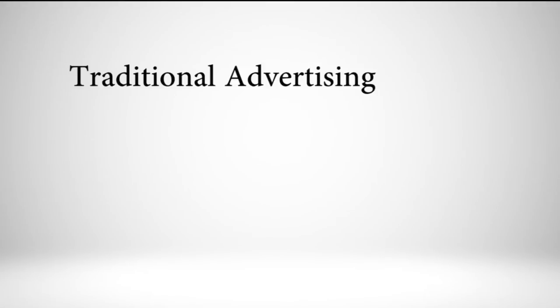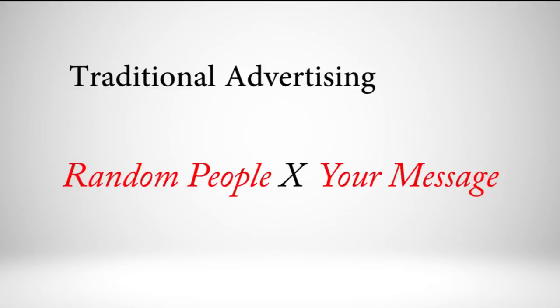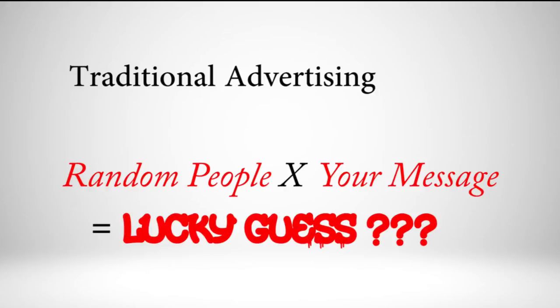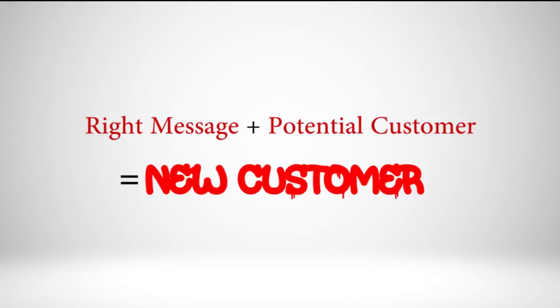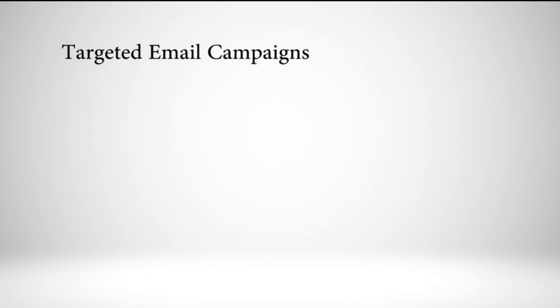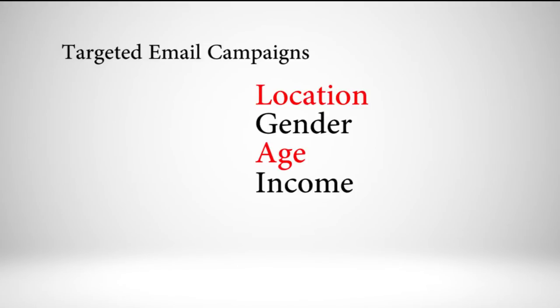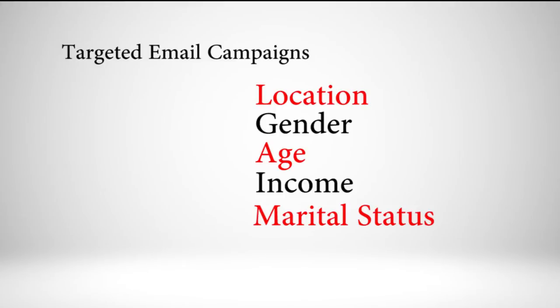Email marketing is also highly targeted. Most forms of advertising rely on hitting thousands of people hoping a few respond, but sending content through email gets the right message directly to the right people. You can build a managed list and send targeted emails based on just about anything — location, gender, age, income, marital status, and more. This eliminates a lot of the guesswork that makes other forms of marketing so inefficient.